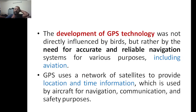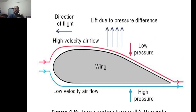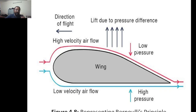GPS uses a network of satellites to provide location and time information, which is used for aircraft navigation, communication, and safety purposes. This is how the bird looks like — the lift the bird achieves when flying is because it creates a pressure difference. There is low pressure on top and high pressure below, and this pressure difference makes the bird take flight.